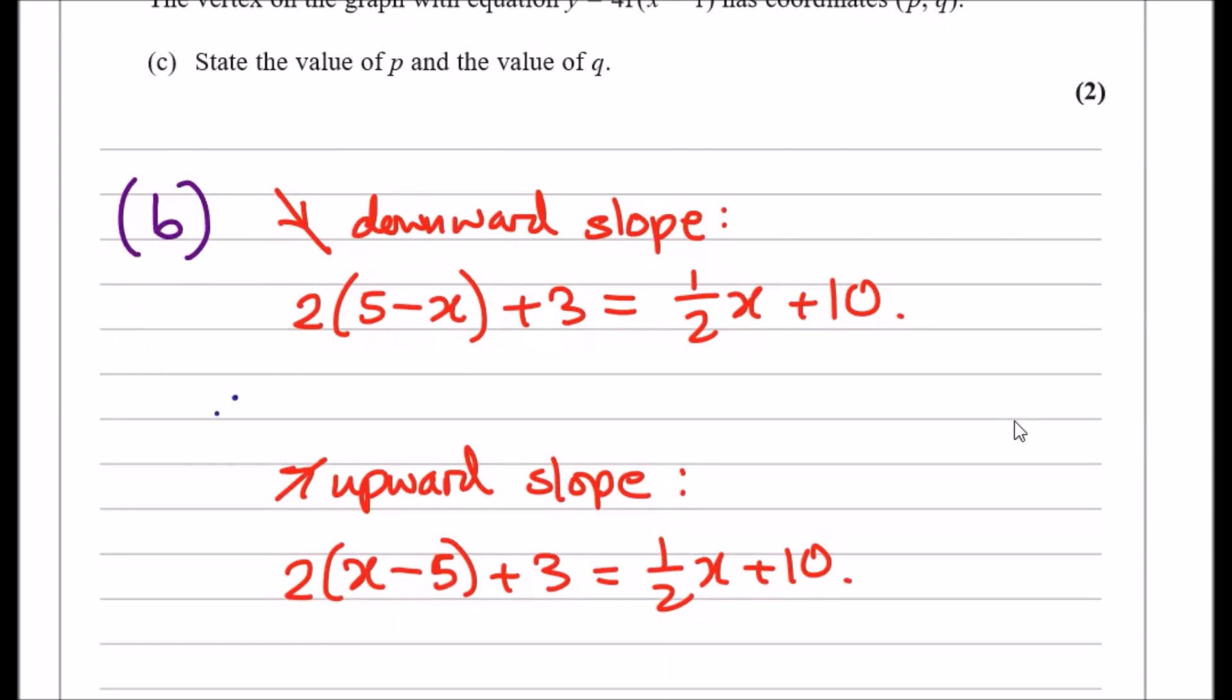So let's do it step by step. Expanding this, we should get 10 minus 2x plus 3 equals half x plus 10. Collecting, putting all the x's on the left side and the numbers on the right, actually you can just cancel out 10 right now. You're going to have firstly minus half x, so you're gonna get minus 2.5x equals minus 3. Then dividing these from each other, dividing minus 2.5 across, it should get x equals on my calculator 1.2.